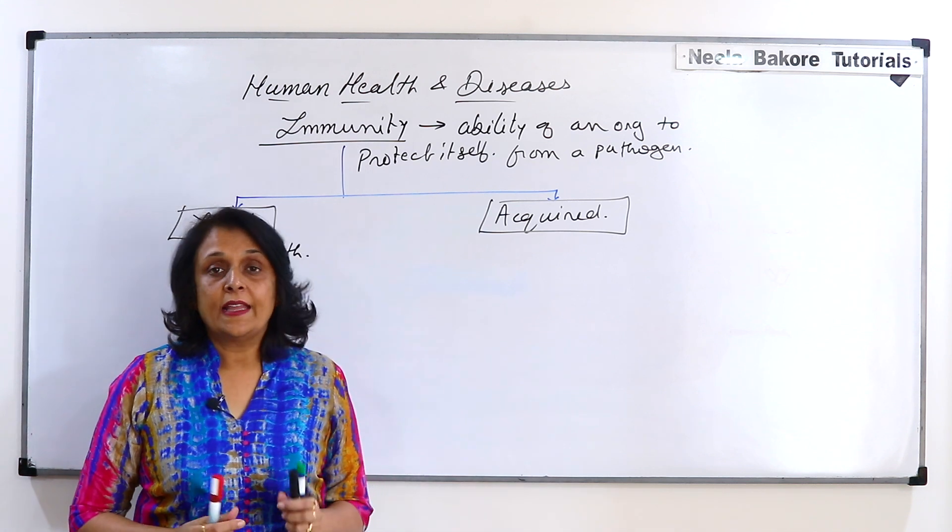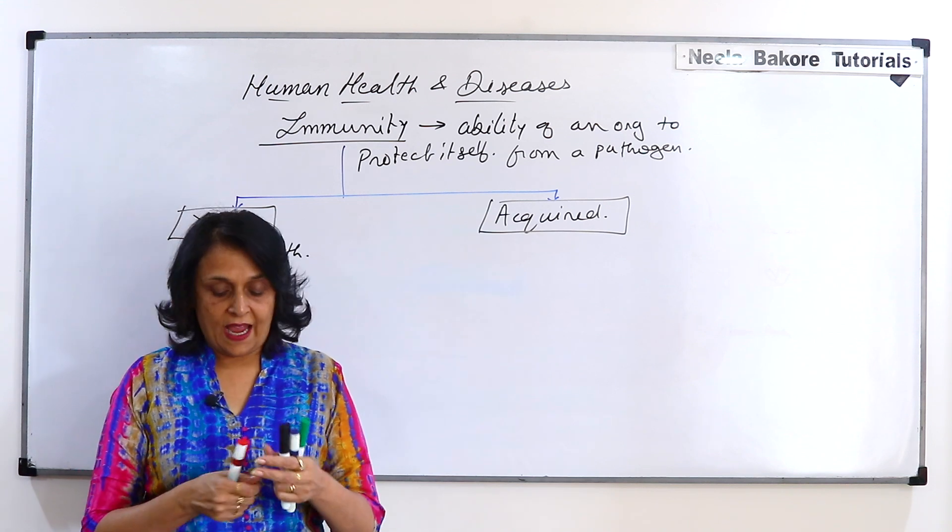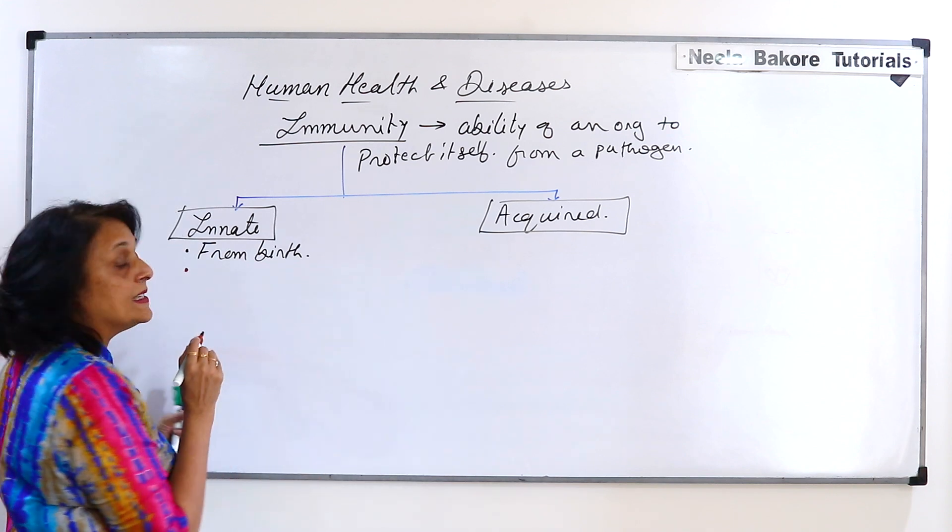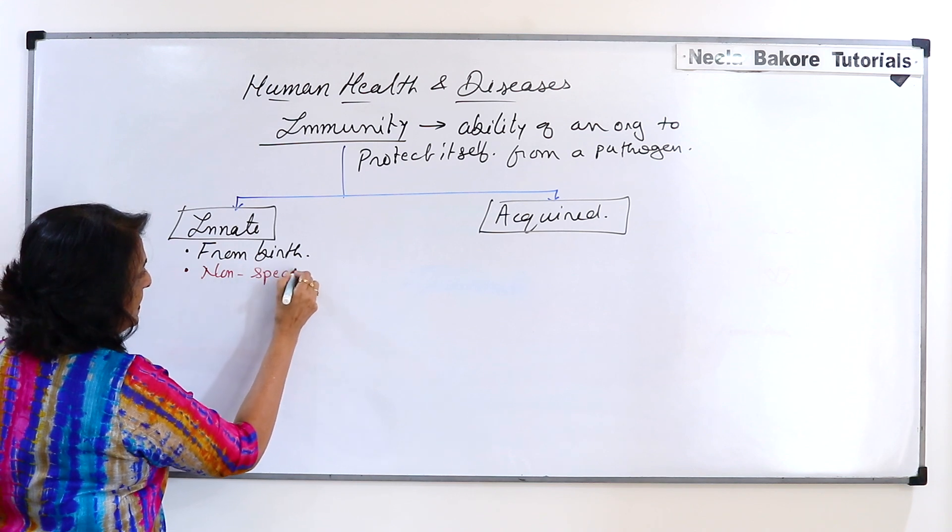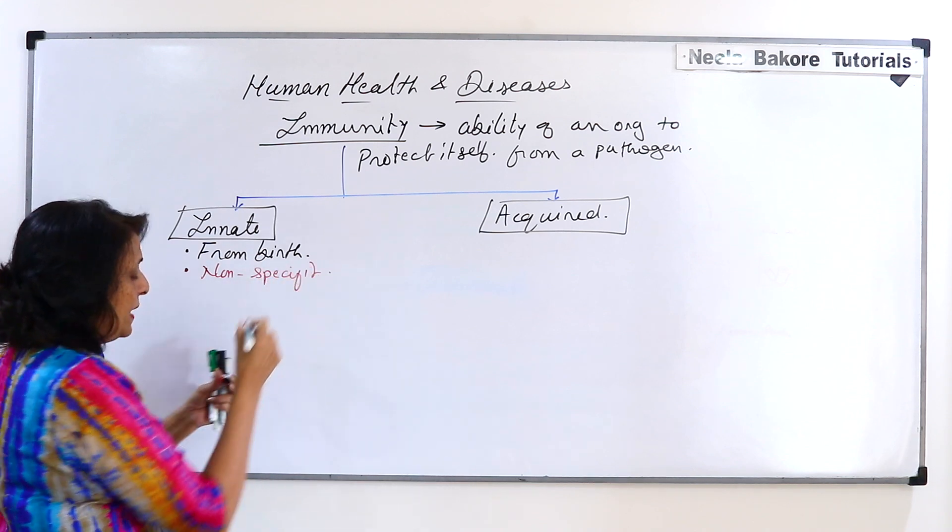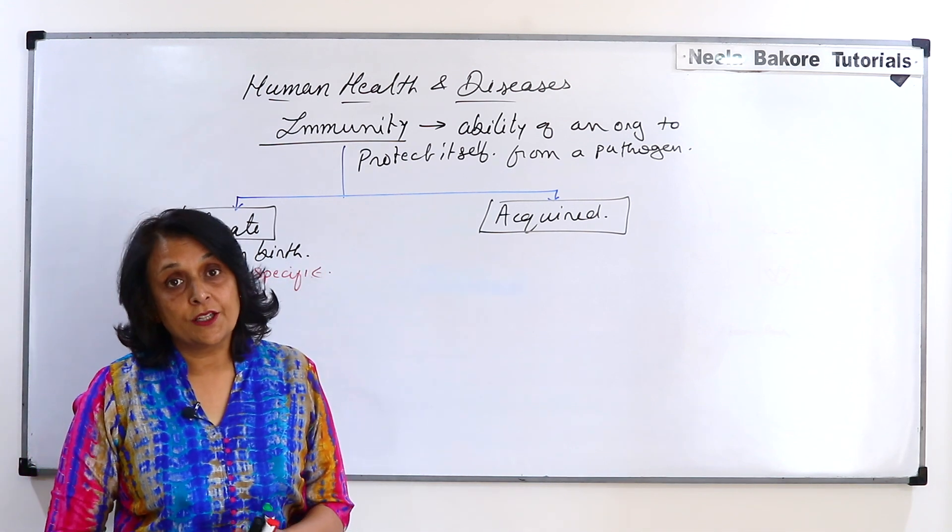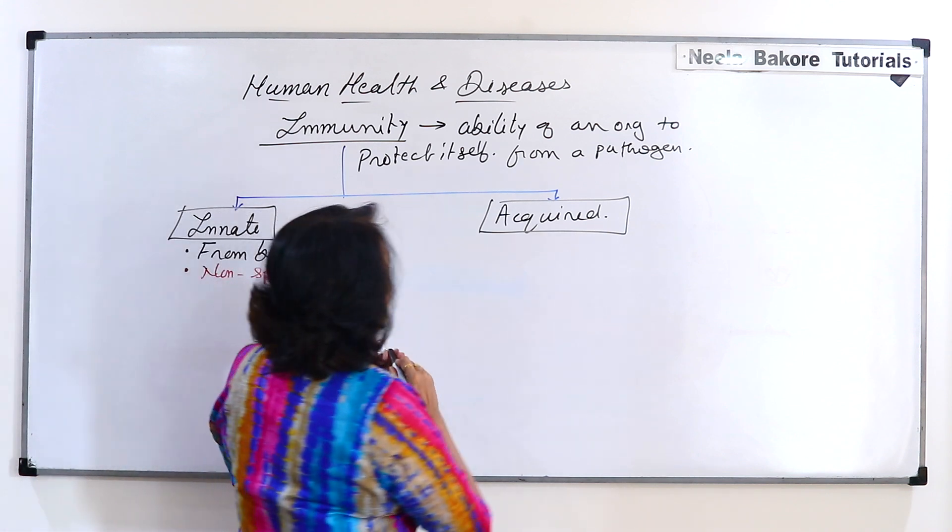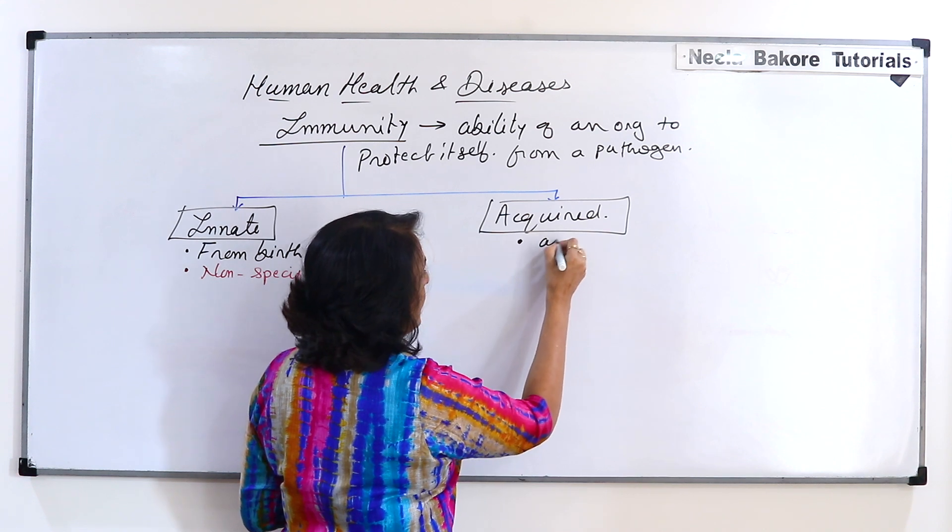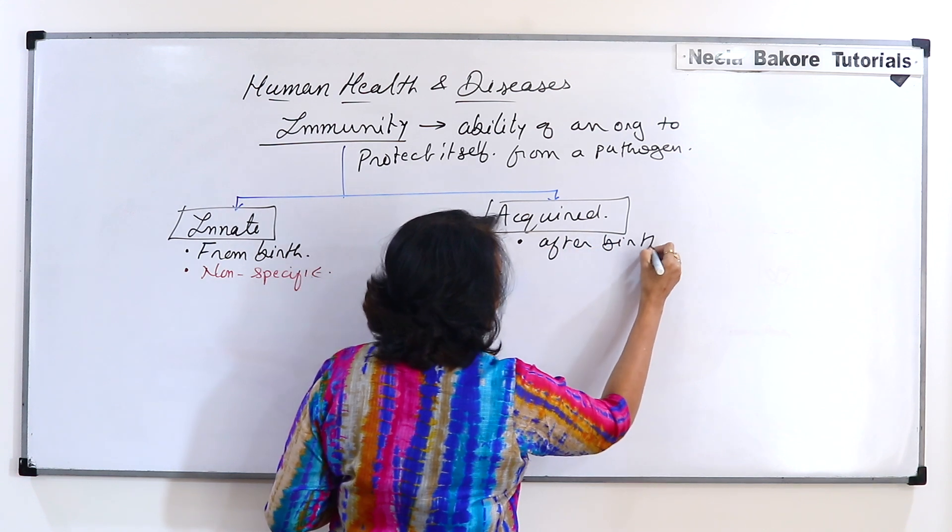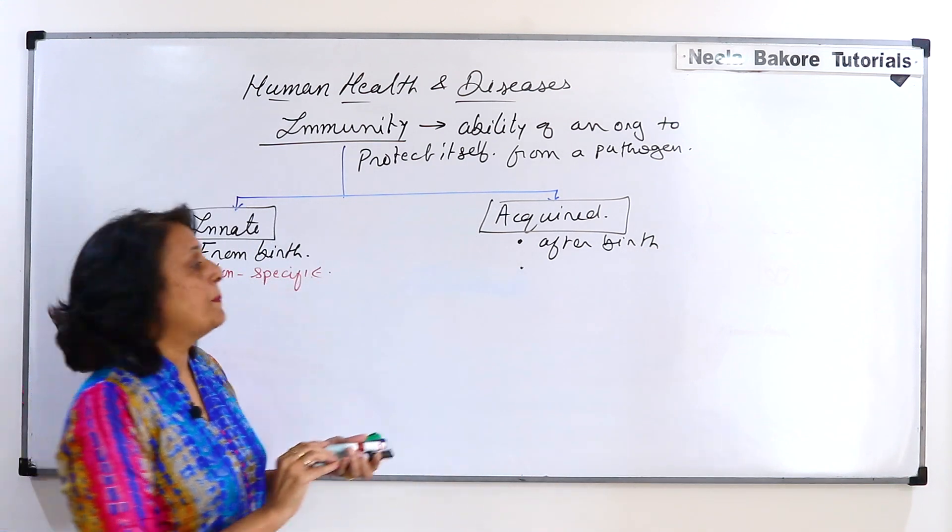Now this innate, that means the one with which we are born, this type of immunity is non-specific. That means this immunity is going to be same for any kind of pathogen which enters into our body. And what about acquired? This is the immunity which we get after birth and it is specific to a particular type of pathogen.